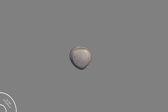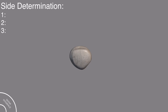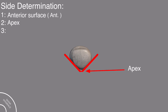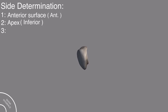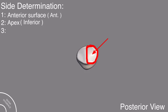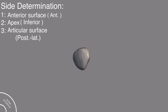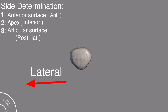Now we come to the side determination of the patella bone. For the side determination, you have to remember three main points. Number one, the anterior surface should be on the anterior side. The apex of the patella should be pointed downward. And on the posterior surface, this is the lateral articular facet, and it should be on the lateral side posteriorly. So this is the lateral side.